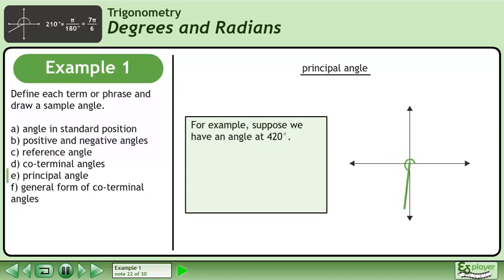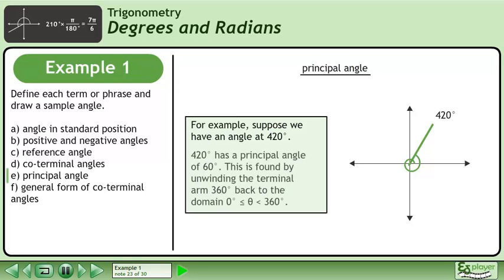For example, suppose we have an angle at 420 degrees. 420 degrees is the principal angle of 60 degrees. This is found by unwinding the terminal arm 360 degrees back to the domain between 0 degrees and 360 degrees.